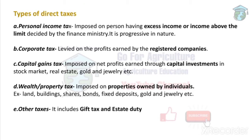Next is wealth or property tax. People must show the government the properties they own and prove they were acquired legally. If caught with illegally obtained money or assets, the income tax department takes action. Examples include land, buildings, shares, and gold jewelry. Other taxes in this category include gift tax and estate duty.